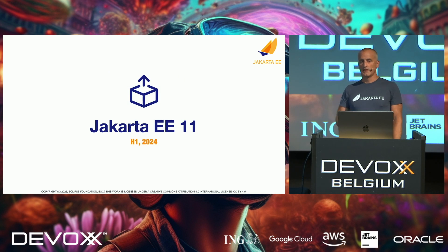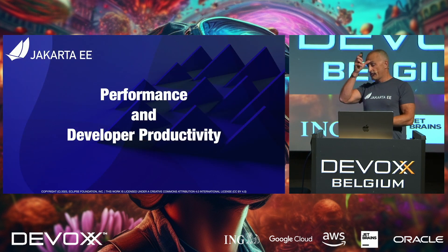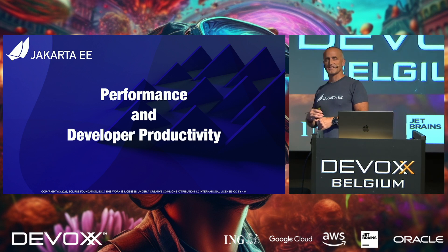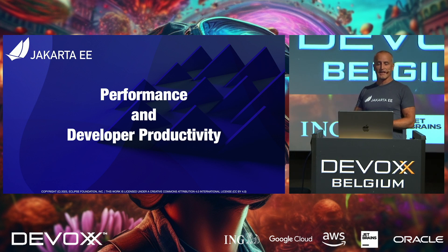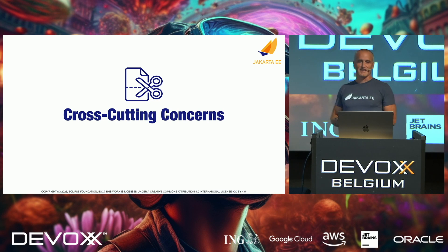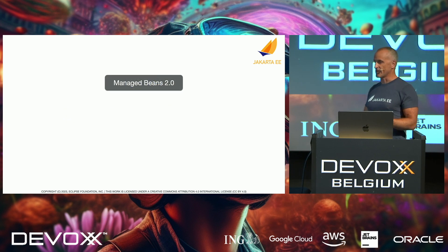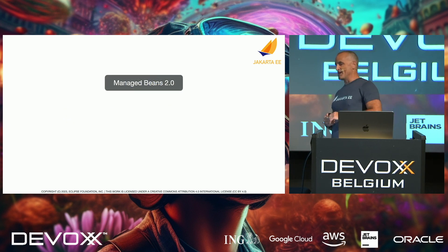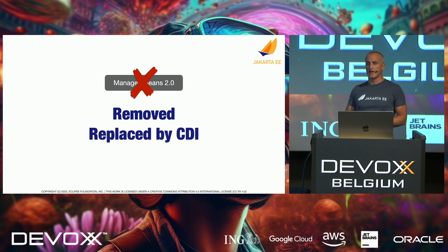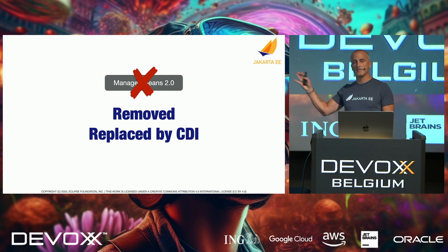Expect Jakarta EE 11 somewhere around summer next year. The theme hasn't been figured out by marketing yet, but I hope it will be something along the lines of performance and developer productivity. Let me start with some cross-cutting concerns. One thing we're doing is removing managed beans and replacing them with CDI — so no more managed beans, and that's the specification that is removed from EE 11.